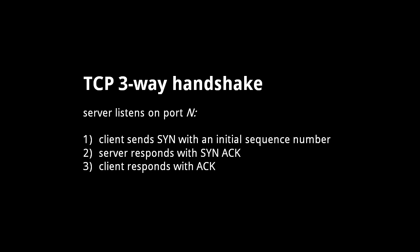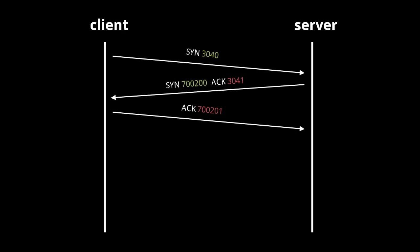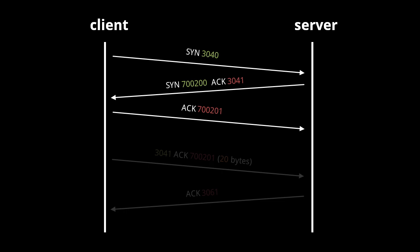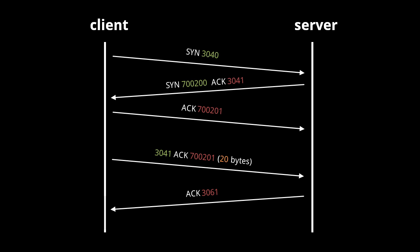Once the client receives this response, it sends another segment with just the acknowledged flag set, and an acknowledgement number that is 1 greater than the sequence number received from the server. After this three-way handshake, both sides have shared their randomly chosen sequence numbers and gotten acknowledgement of those numbers, so both sides are ready to send and receive data. In an example connection, the client sends a segment with the synchronized flag and sequence number 3040. The server responds with synchronized and acknowledged flags, its own random sequence number, and acknowledgement number 3041. The client completes the handshake with acknowledgement number 700201.